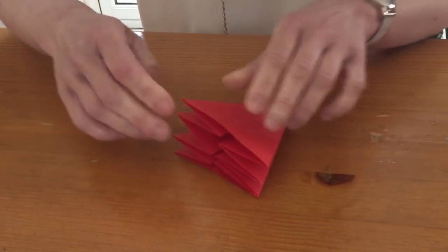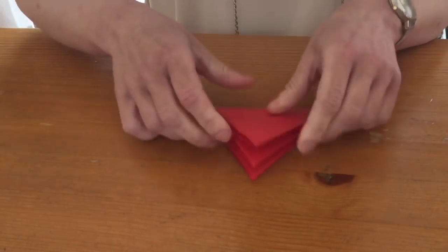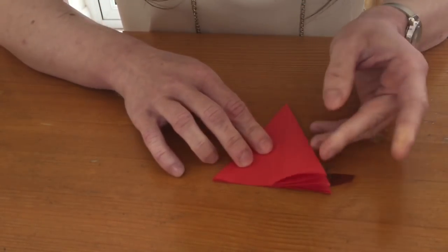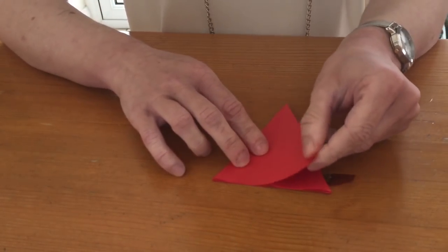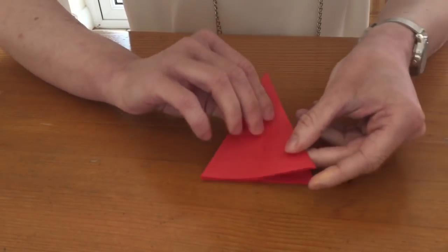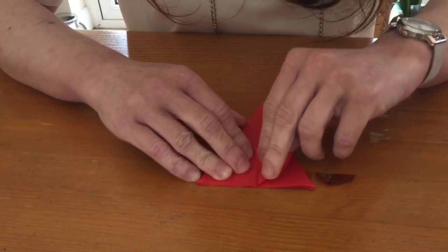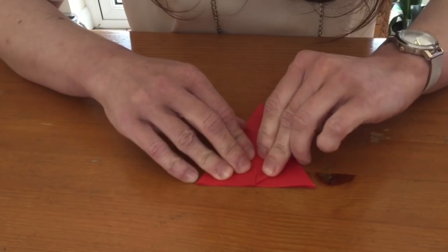So that's what you'll end up with, a little triangle, a little pointy triangle. So now this is what you want to do next. You want to grab each tip here and fold it up, just like so.